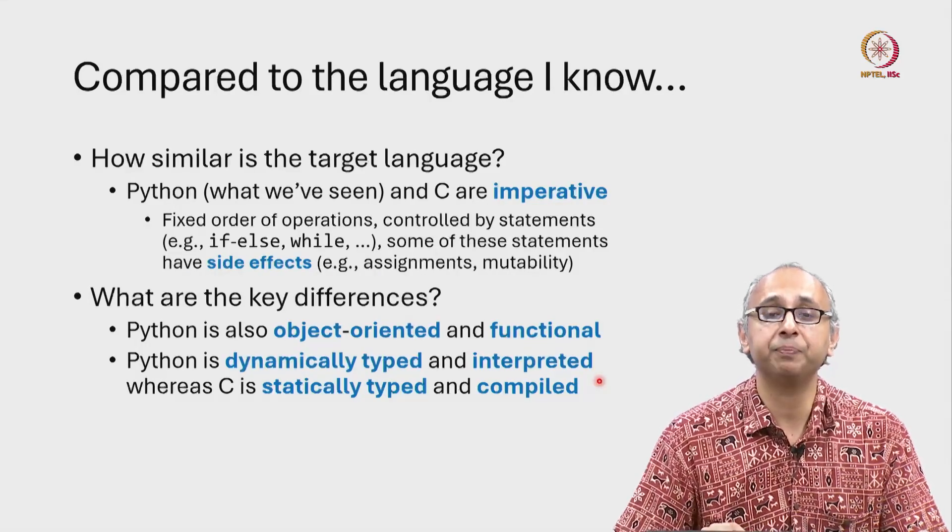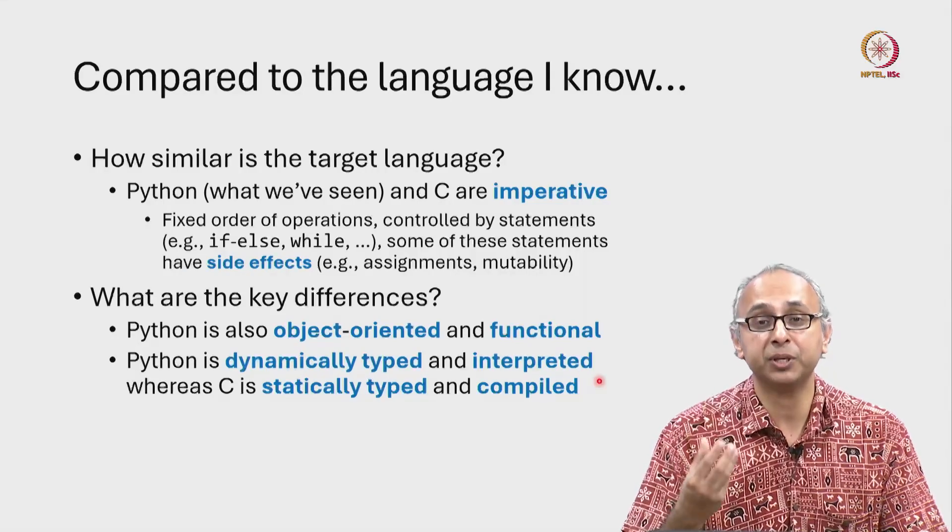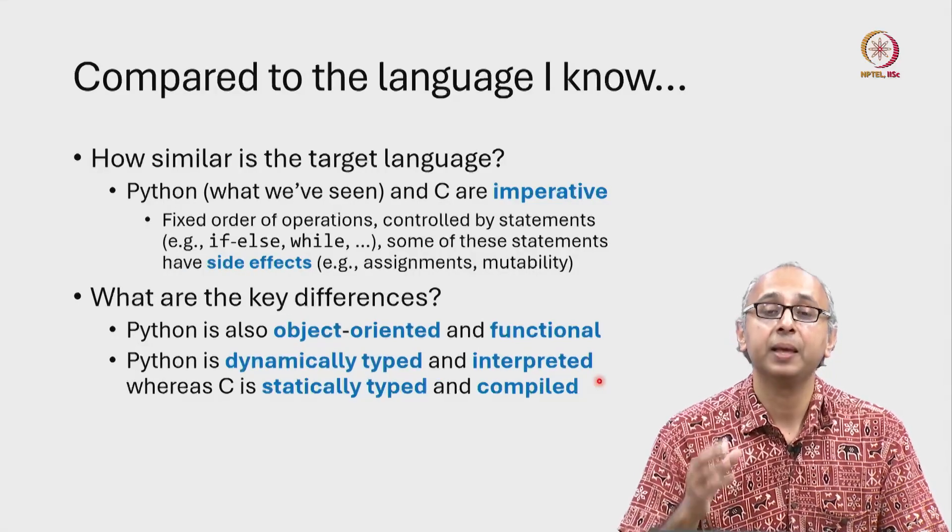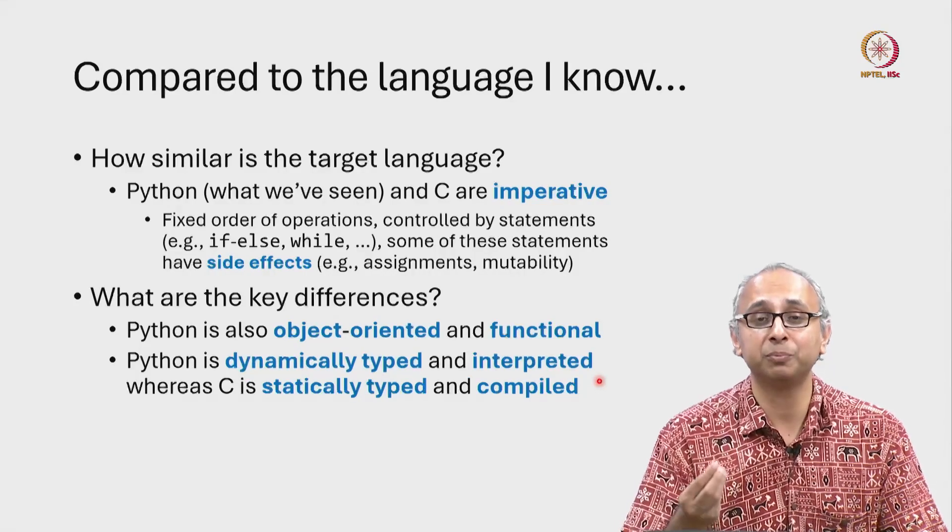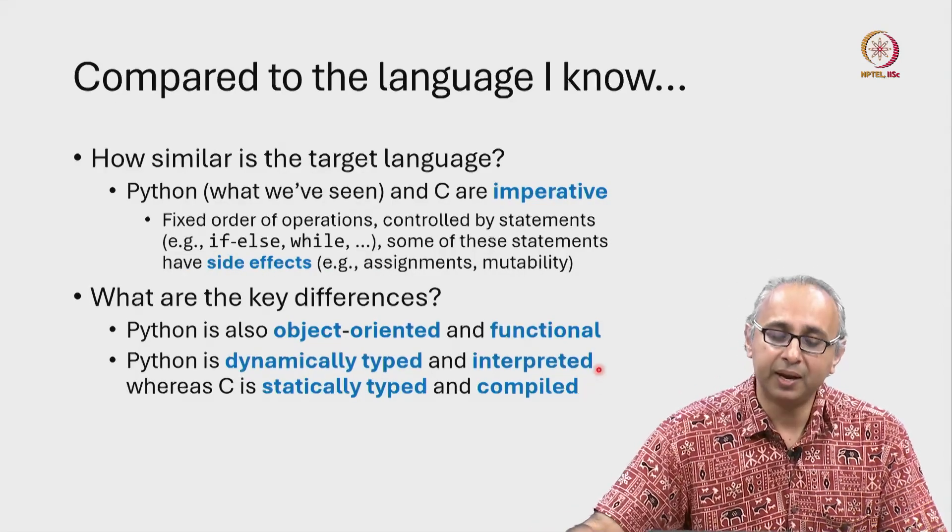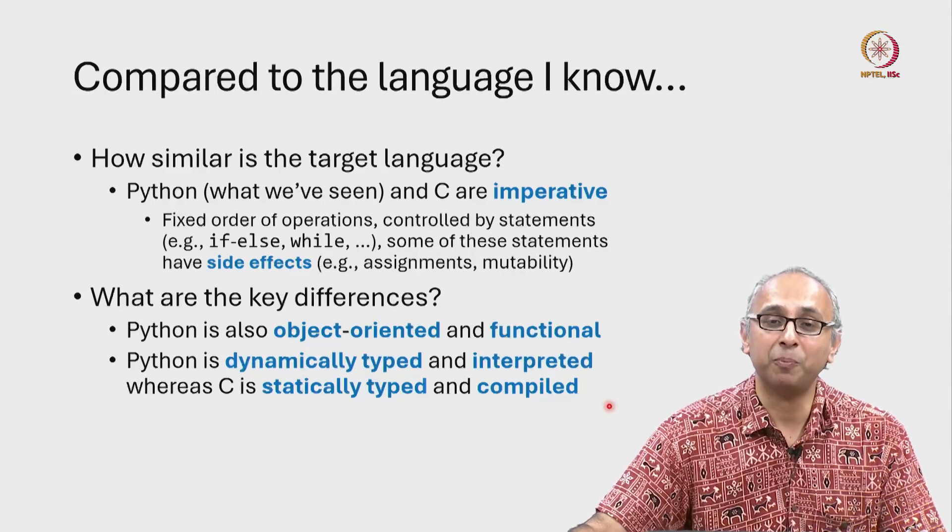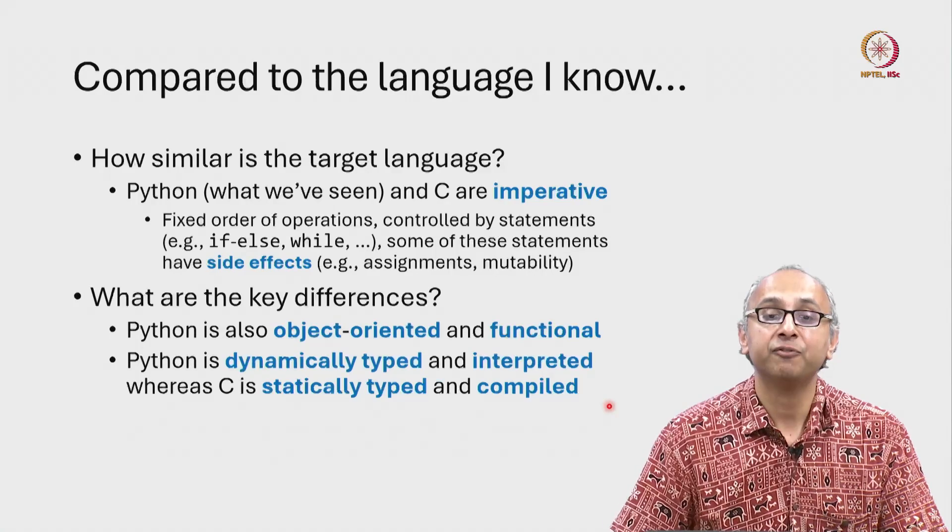When we want to execute a C program, we take our C code and run it through this special piece of software called a compiler and that will produce another file called the executable code and that is the code that we will run. There are many other differences between compilation and interpretation which I am going to defer for now.